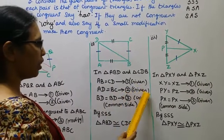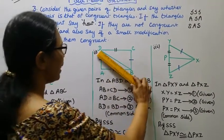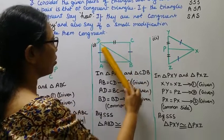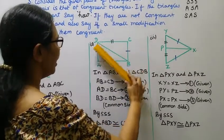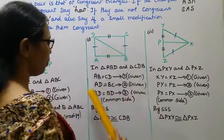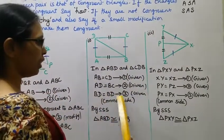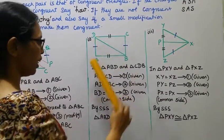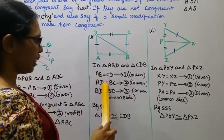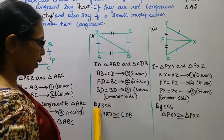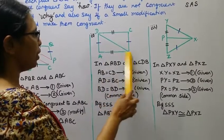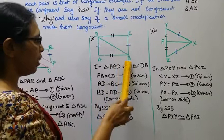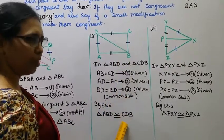That is the second point given: AD is equal to BC. That is BD. This triangle has the third point given — BD is a common side. By side-side-side, triangle ABD is congruent to triangle CDB.